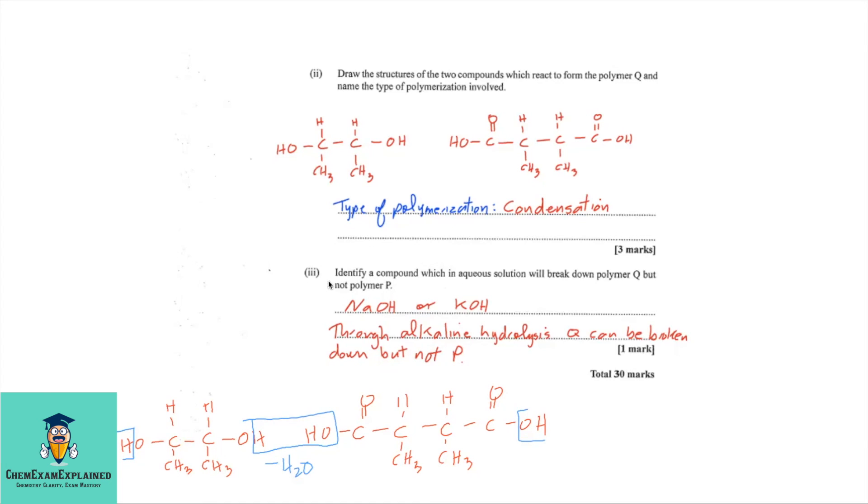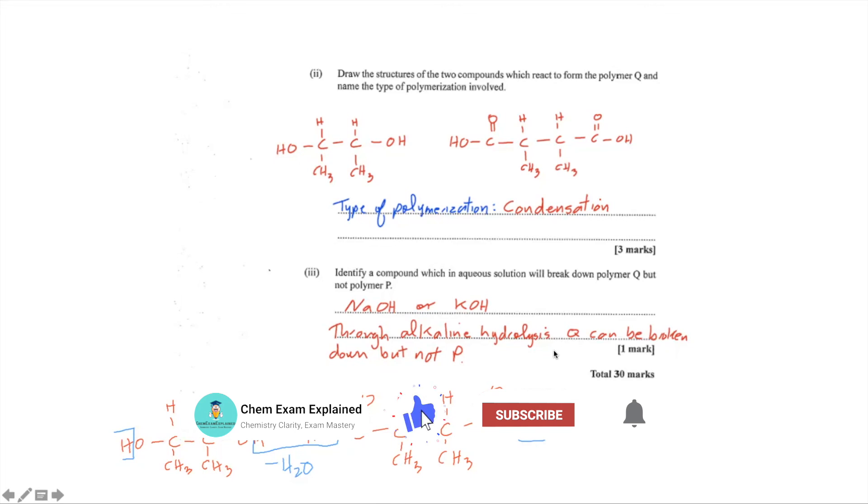Part 3. So, we identify a compound, which in aqueous solution will break down the polymer Q, but not polymer P. So, pretty much, we're looking at an alkali sodium hydroxide or a potassium hydroxide. And this is called alkaline hydrolysis. Alkaline hydrolysis is able to break up a condensation polymer, but not an addition polymer. This is the end of Module 1, 2022.